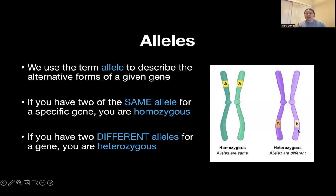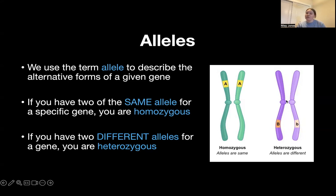So here's that example right here. We have two alleles — one is a big A and the other is a big A, so we call that homozygous dominant, because typically uppercase letters correspond with dominant genes. And over here, we have a big B and a little b, and this is called heterozygous because they are different — homo meaning the same and hetero meaning different.